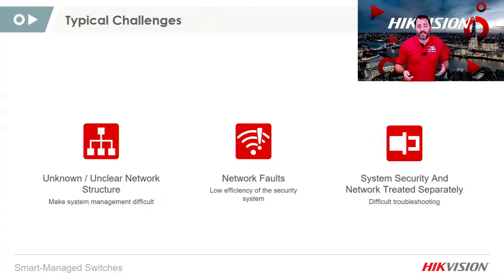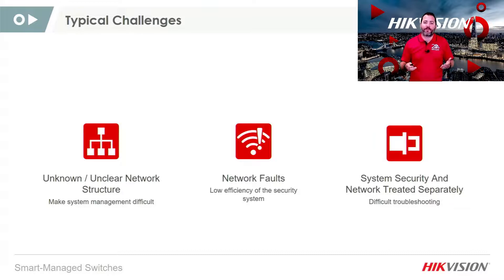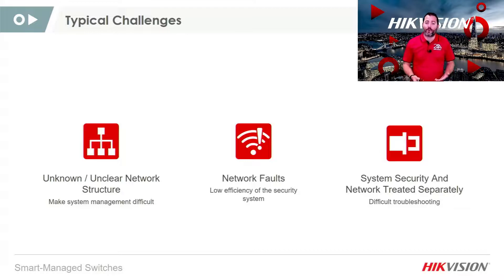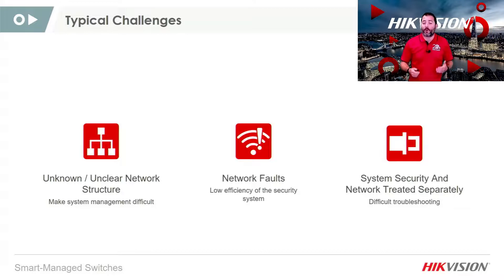Now let's look at some of the IP CCTV network challenges. Unknown or unclear network structure may be because of third-party involvement in the IP network or a legacy installation. There are also network faults using poor networking tools or incorrect cabling, which may result in poor transmission in some areas. System security and network are often treated separately — for example, in a school or medical facility where networks are usually managed by an IT department. All these things can encumber a good IP network on which to deploy your IP surveillance system.